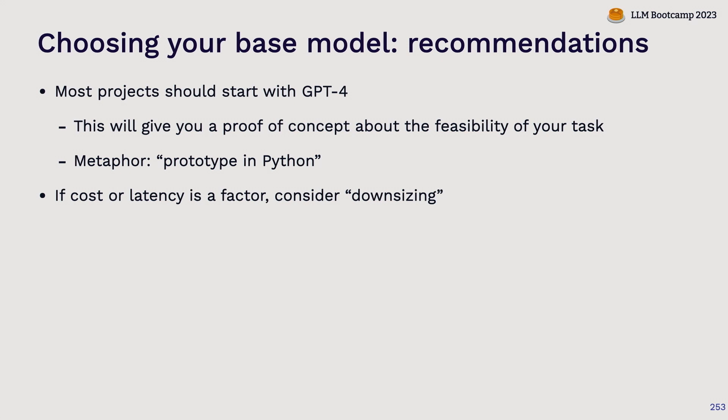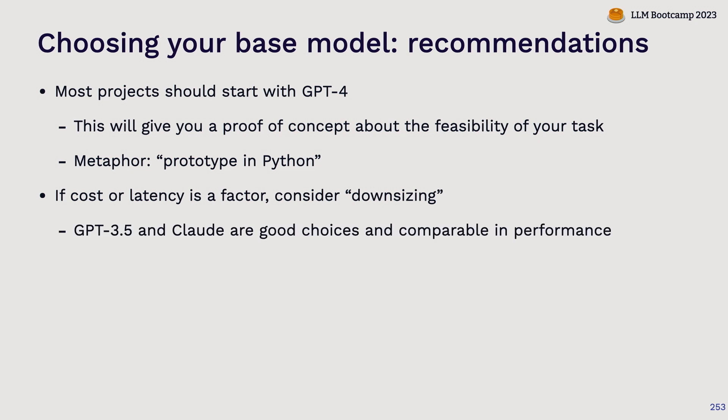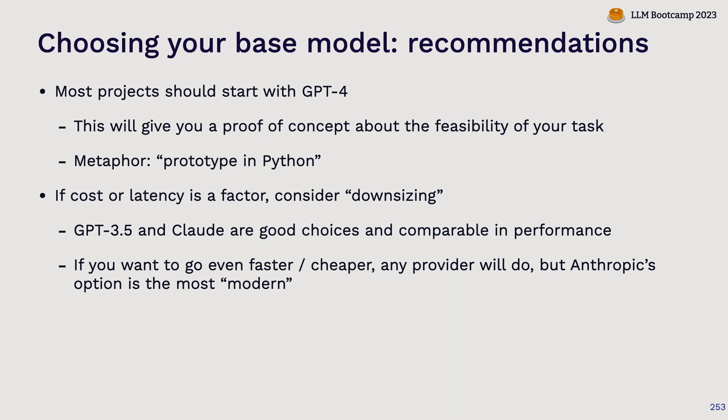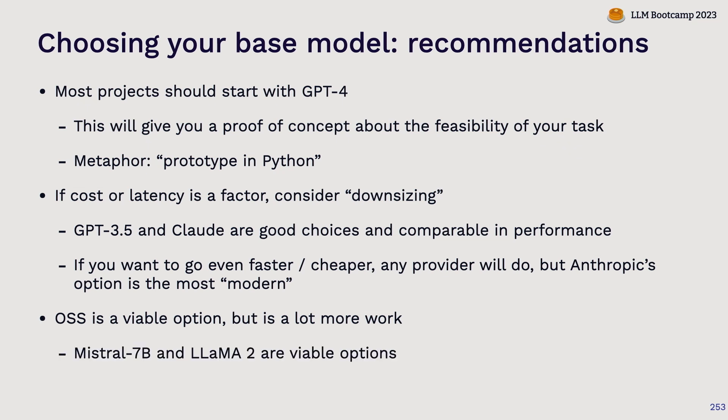If you run into problems with cost or latency, you can consider downsizing. Both GPT-3.5 and Claude are really good choices and are comparable in performance. Of the tiny models — the small options — Anthropic's seems to be trained in the most modern way. Open source is a viable option but is definitely a lot more work, so if you're focused on building applications, I wouldn't start there. The best open source options today are the 7 billion parameter Mistral model and the Llama 2 variants — though new open source models are released every week, so this recommendation may already be out of date.